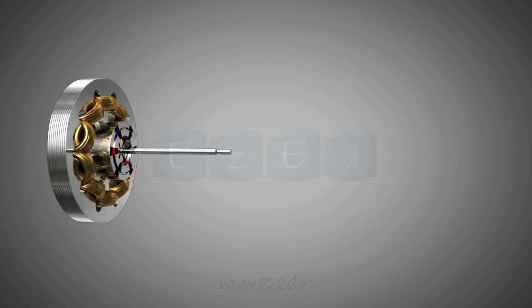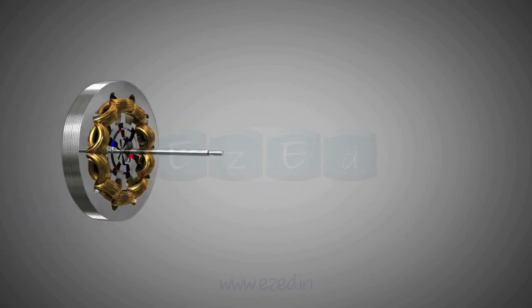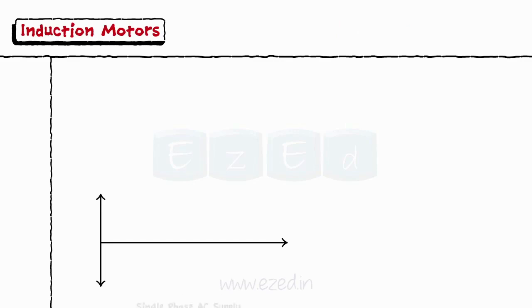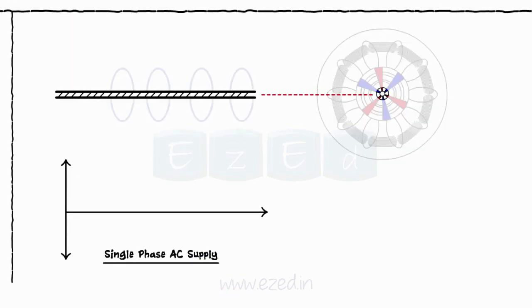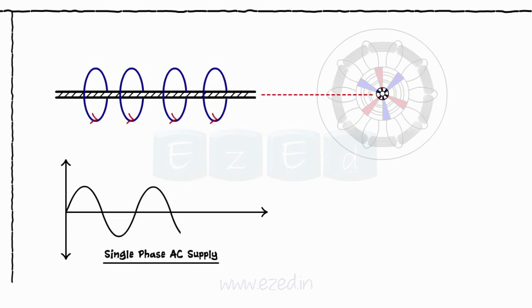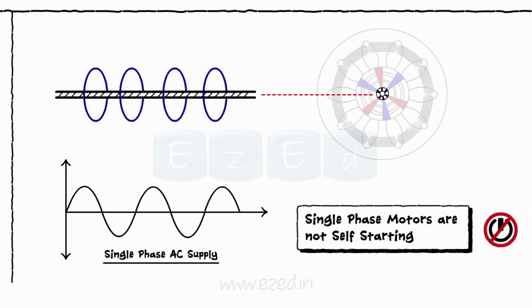The copper bars are permanently shorted at both the ends with the help of end rings. When the single-phase AC supply is connected to the motor, the magnetic flux is generated which rotates along the axis only. It never rotates like a three-phase motor. Hence, single-phase motors are not self-starting.